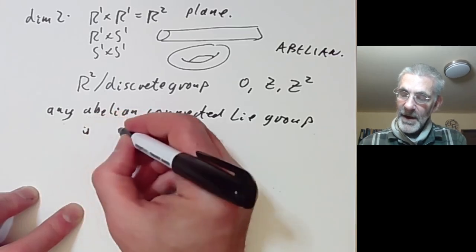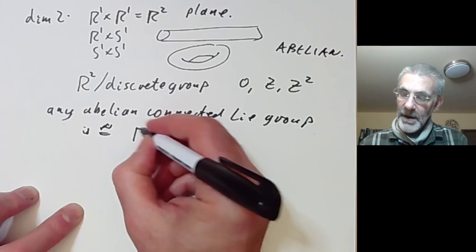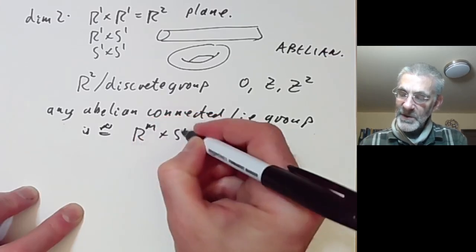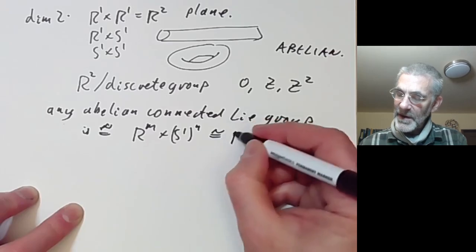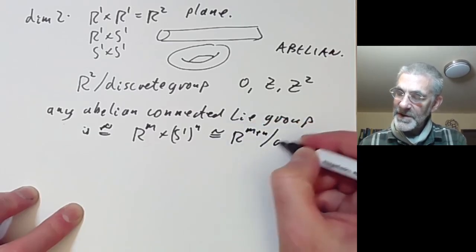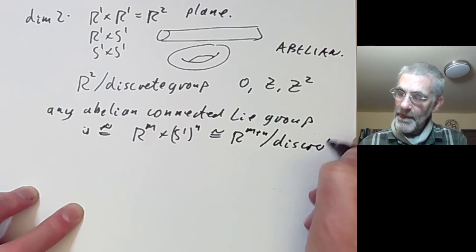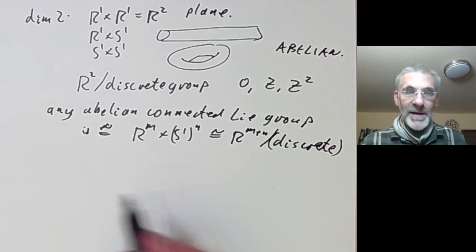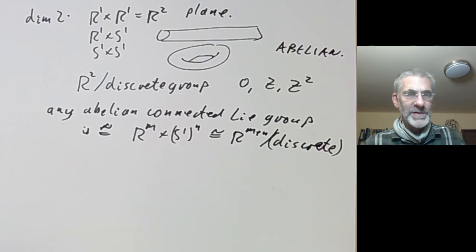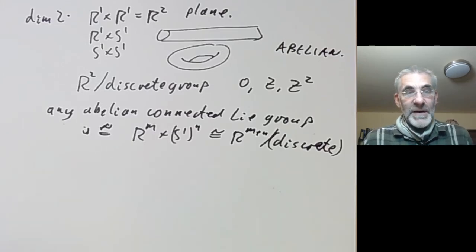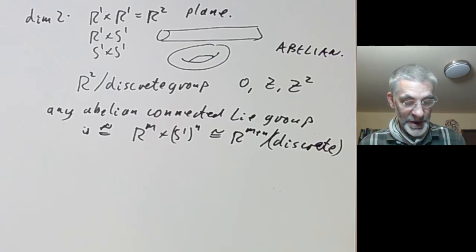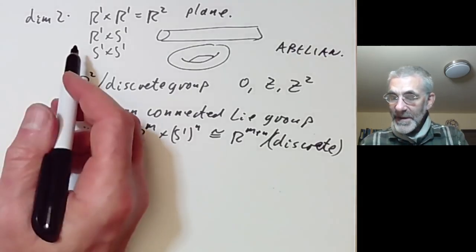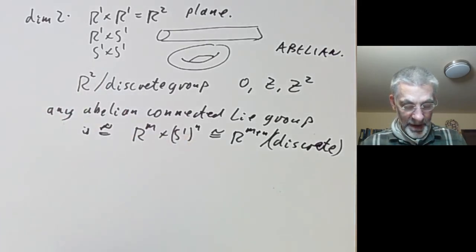More generally, any connected abelian Lie Group is isomorphic to R^m × (S¹)^n, which is isomorphic to R^(m+n) modulo some discrete subgroup. So we know what all the connected abelian Lie Groups are. As usual, classifying disconnected abelian groups is hopelessly complicated in general, although of course you can do the finite ones.